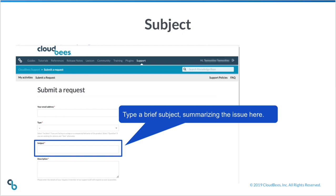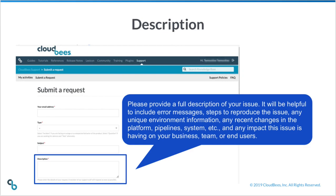In the subject field, type a brief subject summarizing the issue. Please provide a full description of your issue. It will be helpful to include error messages, steps to reproduce the issue, any unique environment information, any recent changes in the environment, pipelines, system, etc., and any impact this issue is having on your business, teams, or end users.